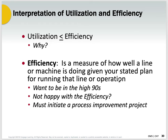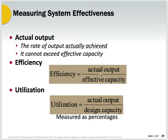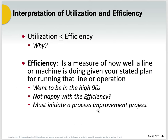Utilization is always less than or equal to efficiency. Why? Because effective capacity is always less than or equal to design capacity. The actual output is the numerator in both equations. Effective capacity will be a smaller denominator than design capacity, so your utilization is going to be less than your efficiency. If you don't understand it, go back and reason it out — put some numbers in there and test it out.